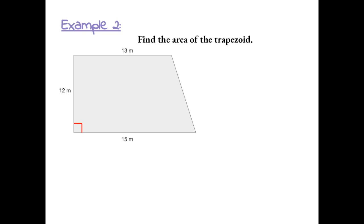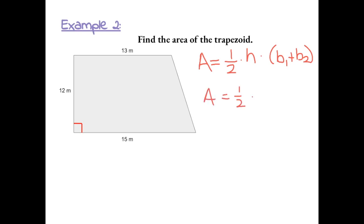Find the area of the trapezoid. Let's start with the formula: area of a trapezoid equals one-half times the height times the sum of its two bases. So the area equals one-half times the height of 12, times base 1 of 15 plus base 2 of 13.